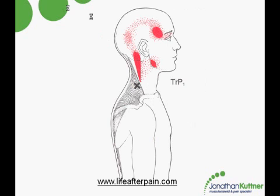So from the primary trigger point, usually the pain will go up. It will end up in the base of your skull, may seem to affect the back of your ear, may run right across the side of your head and end up here and in there. The pain is usually dull, aching, and can be vaguely nauseating.